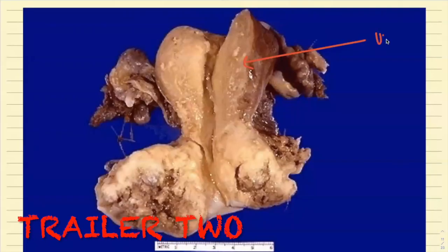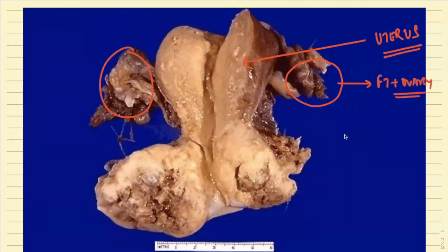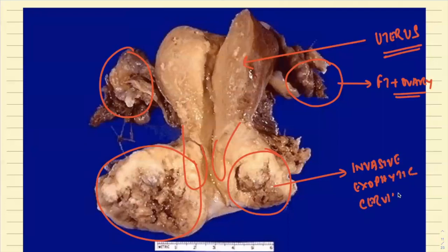This is the cut-open section of the uterus. These portions are the fallopian tube and ovary. Normally the contour would look smooth, but here you can appreciate an exophytic mass exhibiting areas of hemorrhage, necrosis — an abnormal, irregular mass. This is your invasive exophytic cervical carcinoma.